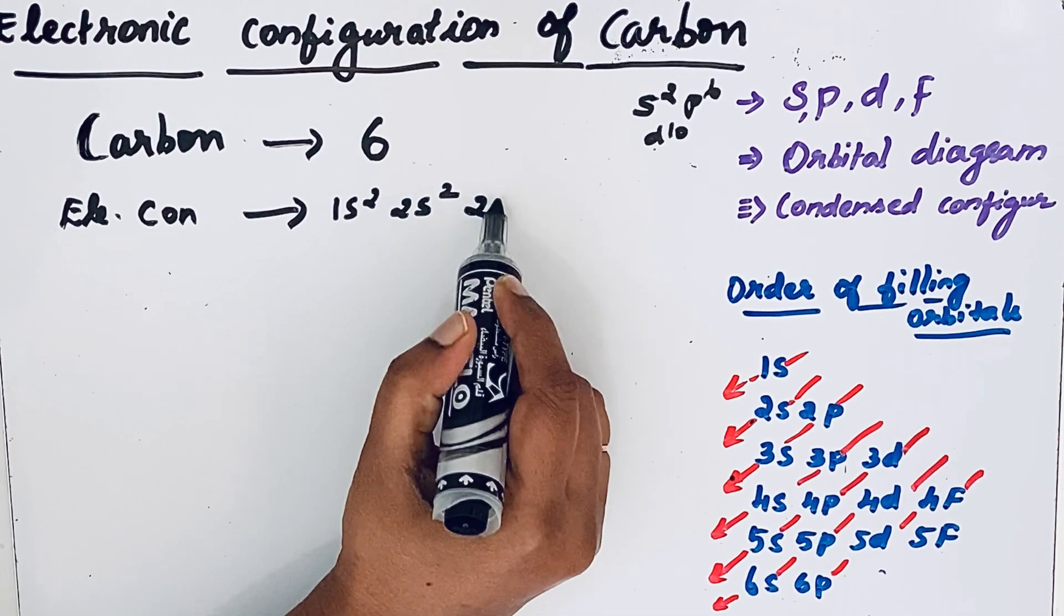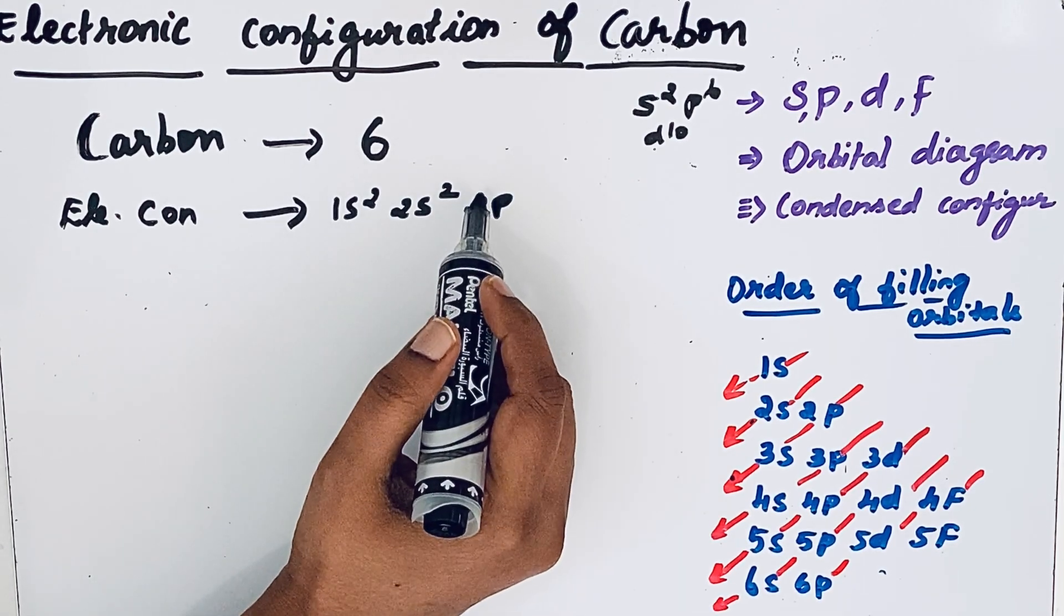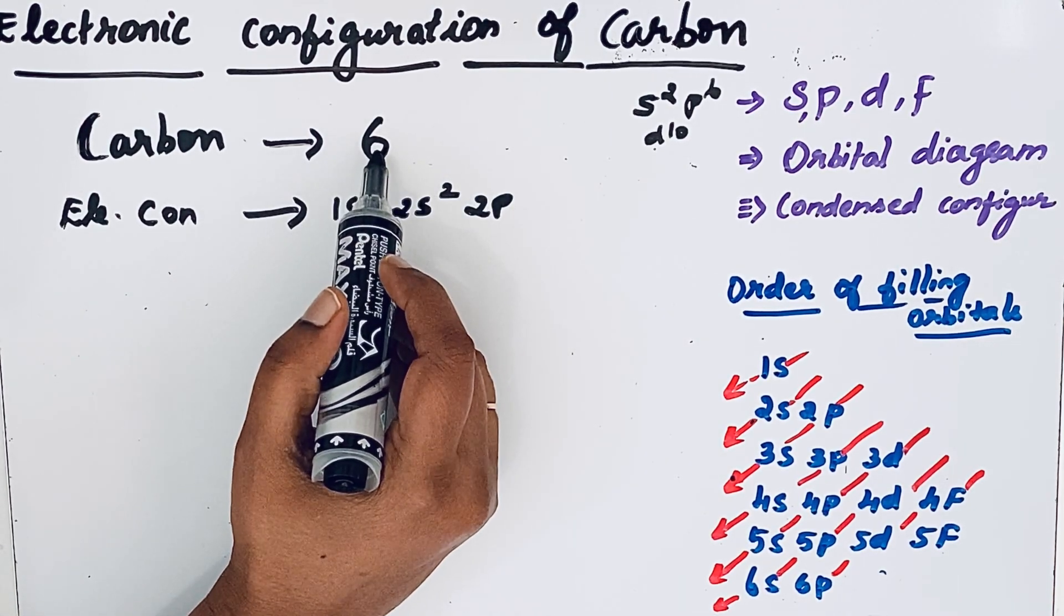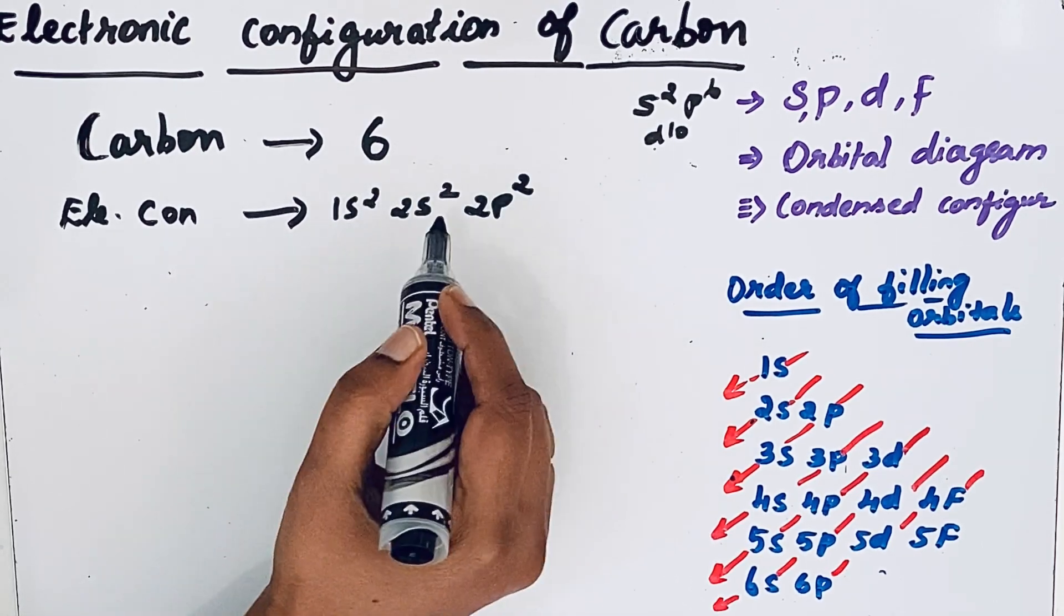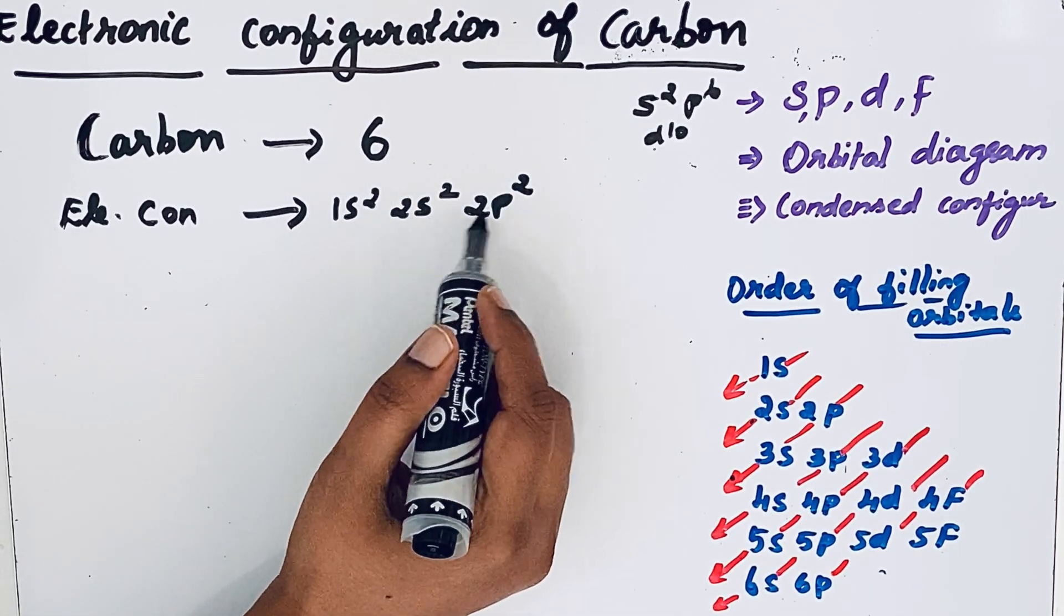So in 2p orbital, even though 2p orbital can fill 6 electrons, but only remaining 2 electrons are there in carbon. So we are writing 2 here. 1s2 2s2 2p2.